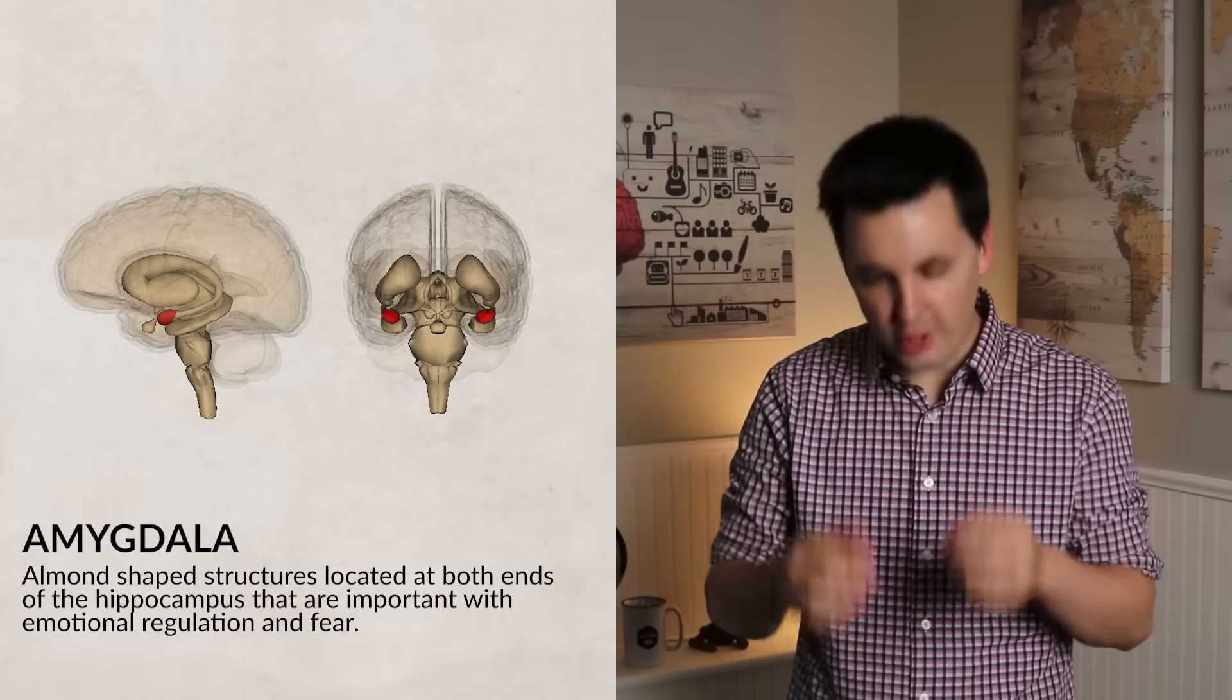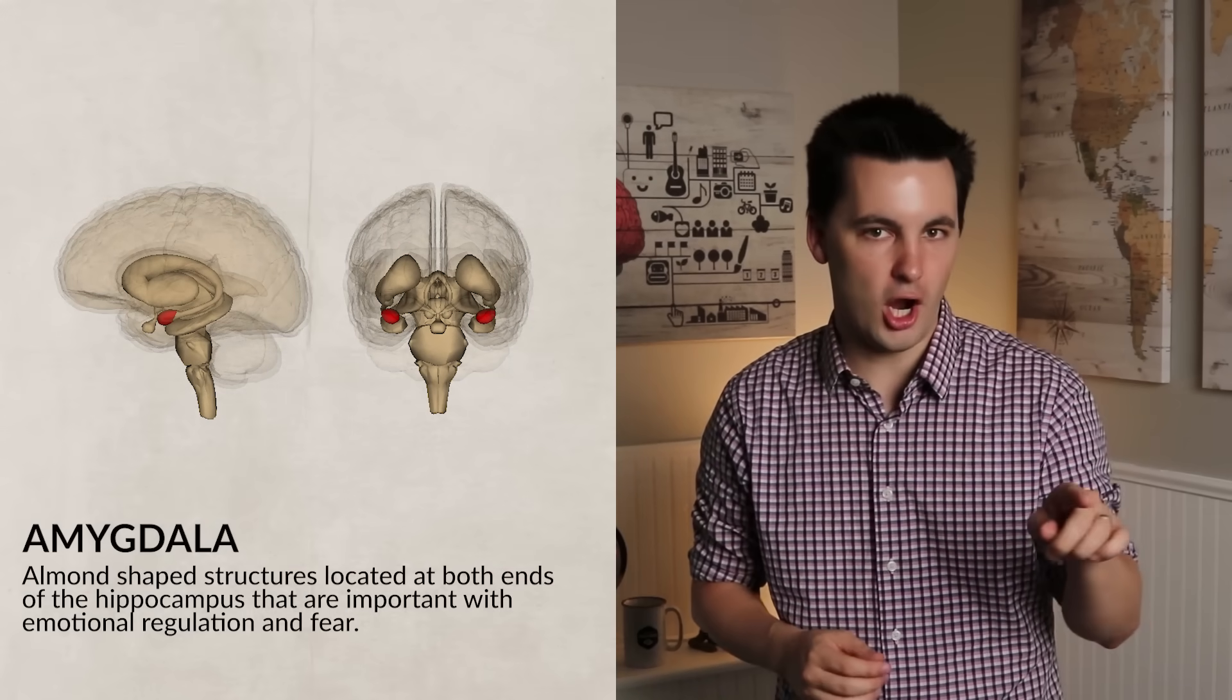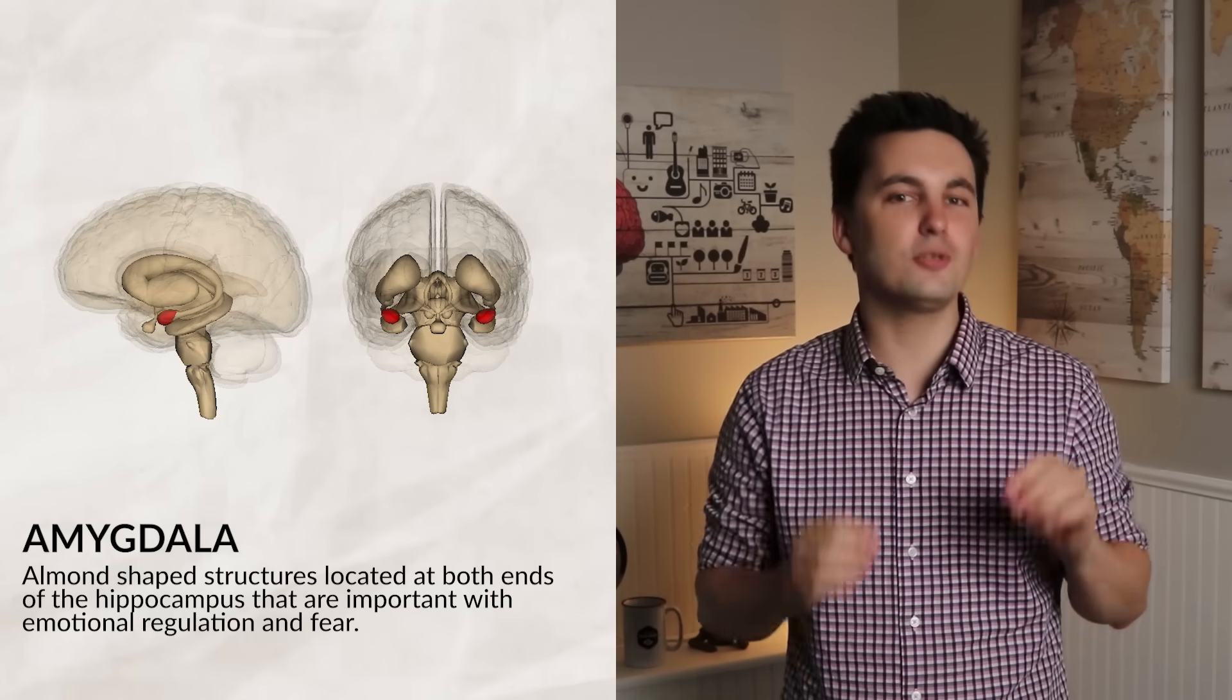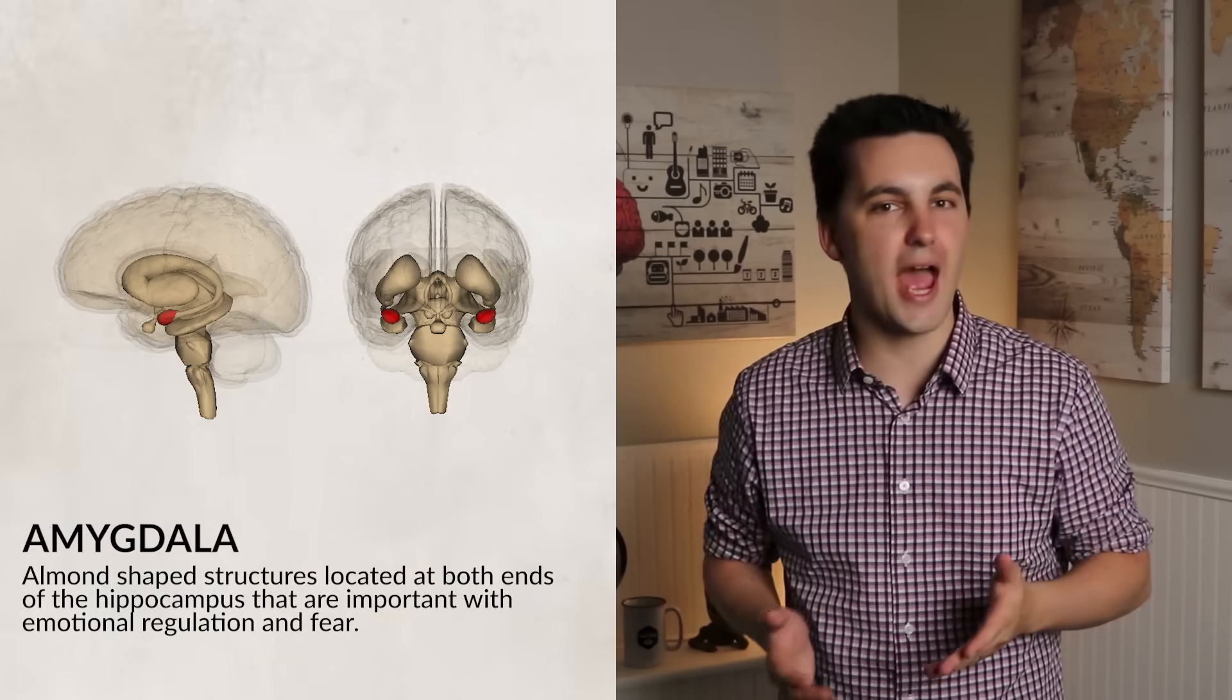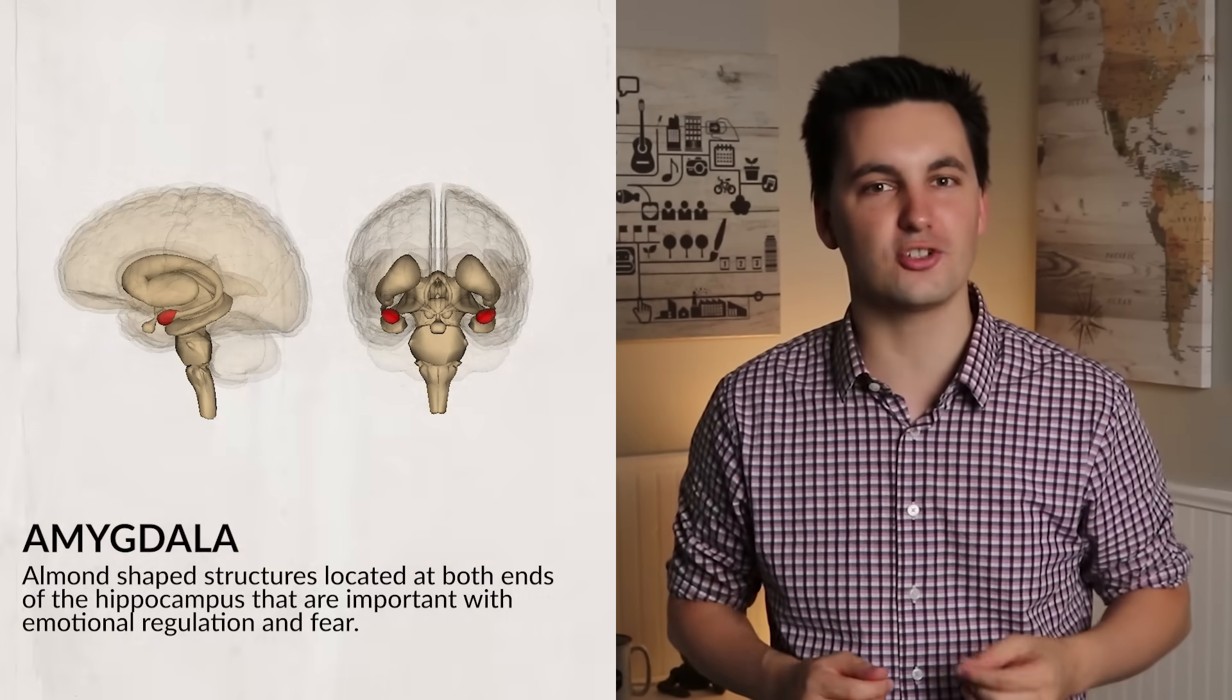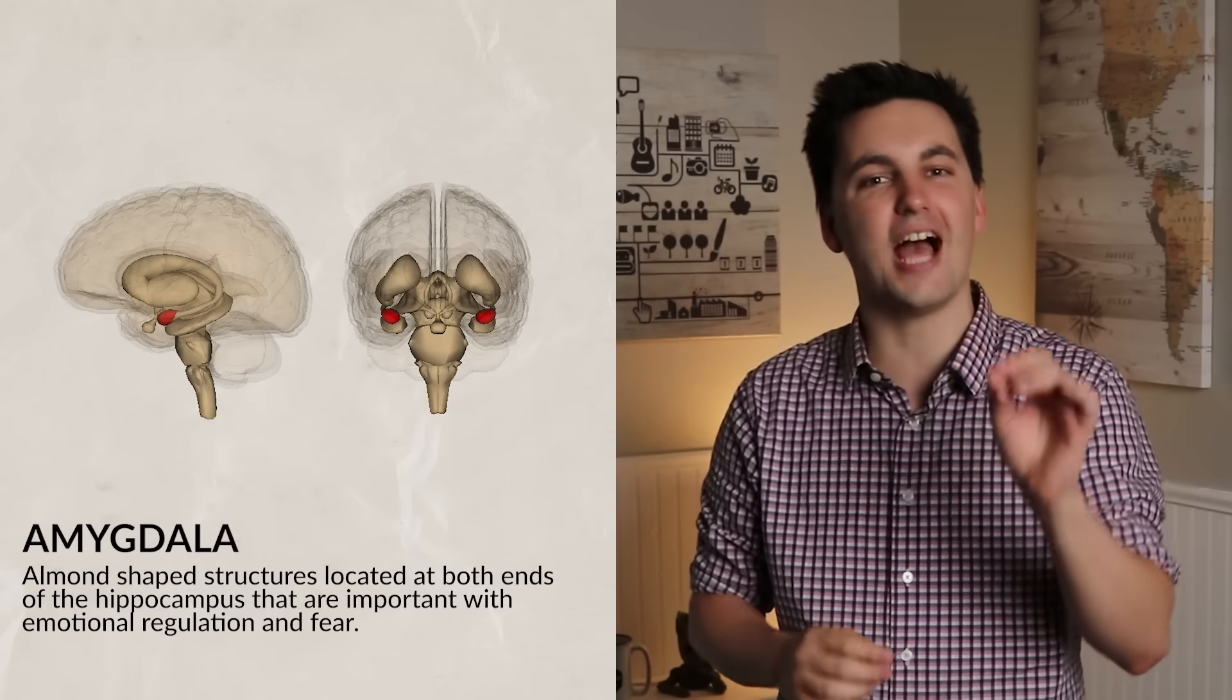Next is your amygdala. This structure is located at the end of each arm of the hippocampus. Two round clusters on the end of each arm, to be exact. This is where you get your emotional reactions from, specifically fear, anxiety, and aggression.